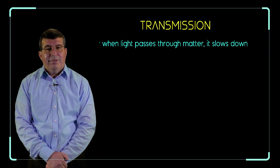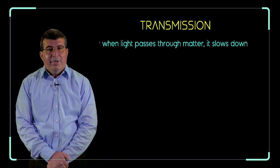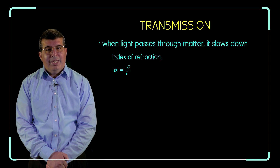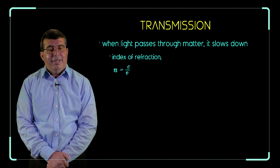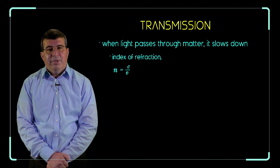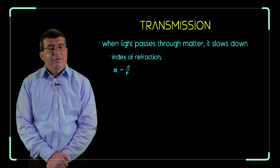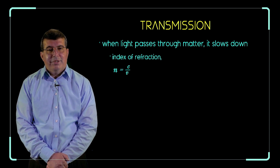What happens when light passes through matter is it slows down from its speed of 300 million meters per second. The exact amount by which it slows down we measure with something called the index of refraction. The index of refraction, given the symbol n (lowercase n), is equal to the speed of light in a vacuum divided by the speed of light in a particular material — n = c/v.